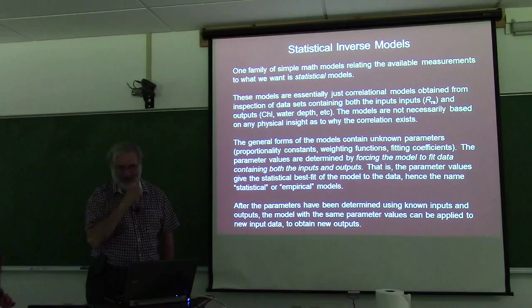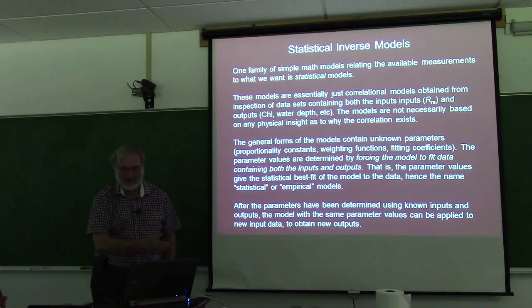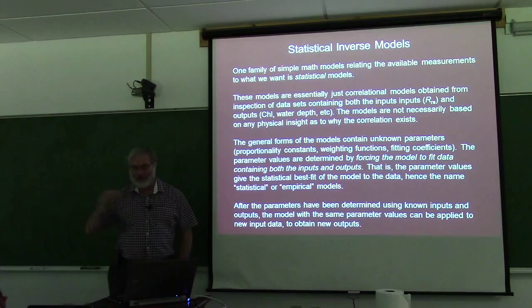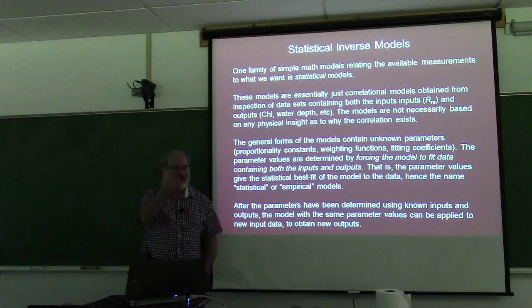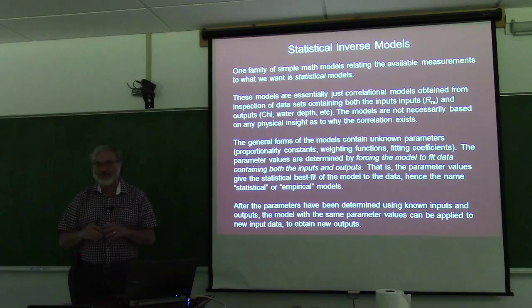This general classification of statistical or empirical methods amounts to correlations between what you have — remote sensing reflectance — and what you want, like chlorophyll. You build these models from a big dataset that has both inputs and outputs: remote sensing reflectances measured at the same time as in-water chlorophyll measurements. Then you find a correlation function that says, given the remote sensing reflectances, here's the chlorophyll. These techniques are nothing but fancy curve fitting — plot all the points, fit a curve, and that's your statistical model.